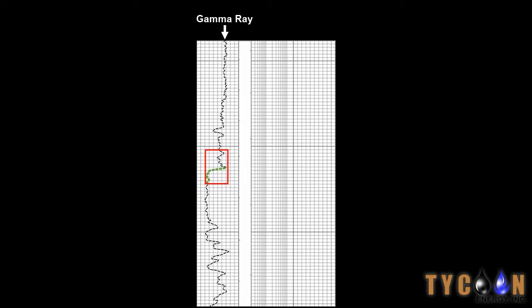But near the bottom, the reading fluctuates because the logging tool is entering a sandy area which has little radiation and could contain oil or gas.